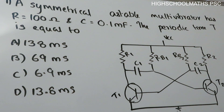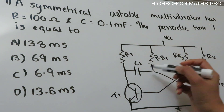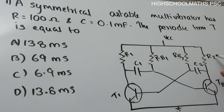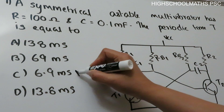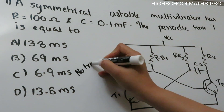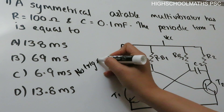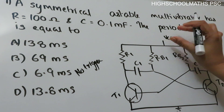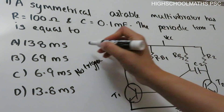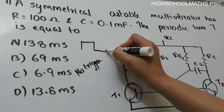For an astable multivibrator circuit with VCC supply voltage, R1, C1, RB1, R2, C2, RB2, transistors T1 and T2 — the astable multivibrator has no stable state. No trigger pulse is needed. When VCC is applied, it begins oscillating.